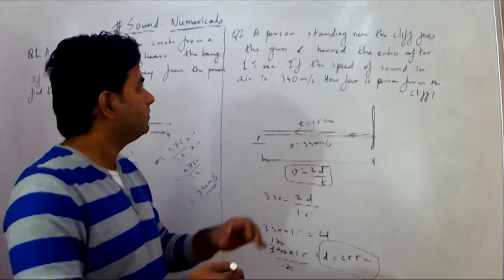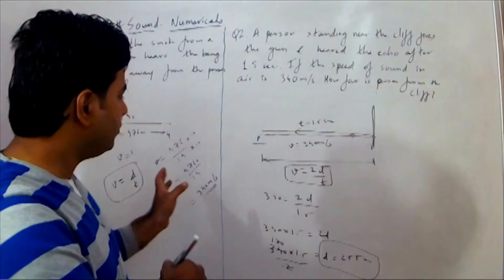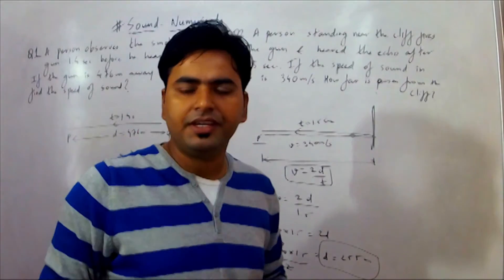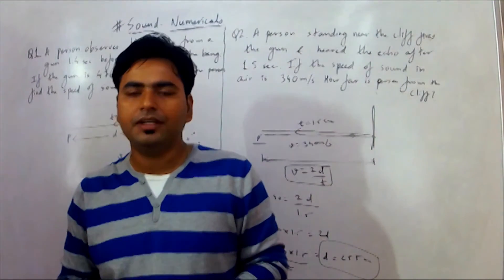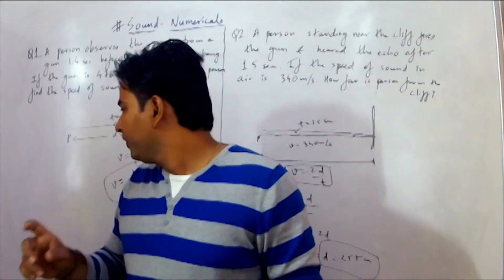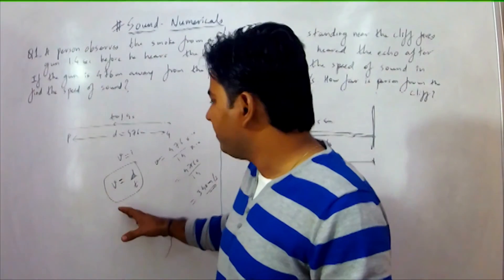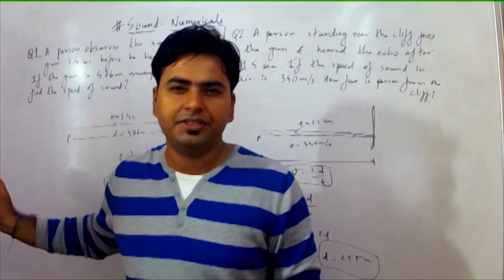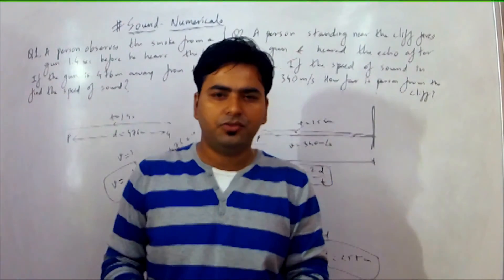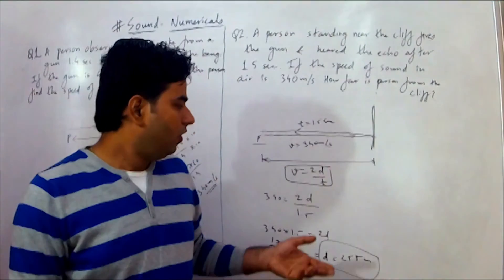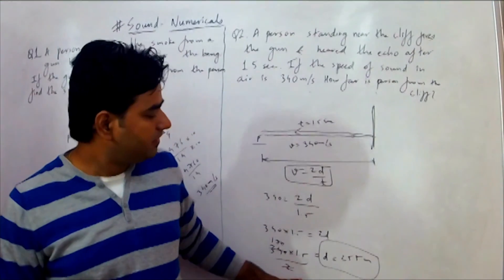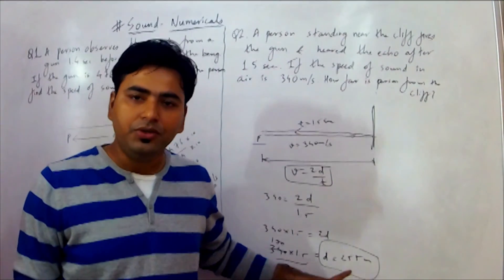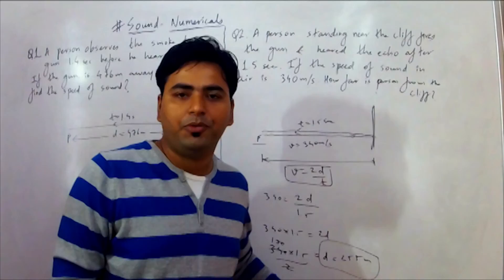So that was the second case. These two situations we have seen here were very basic numericals. In the first case, we used the formula speed = distance/time, because there was no reflection. Where there is a reflection situation, speed = 2d/t.